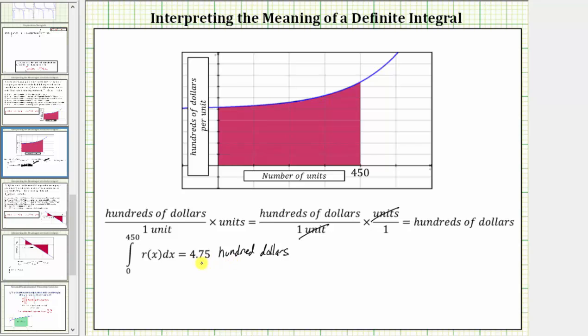4.75 times 100 equals 475. This is equal to 475 dollars, which means the meaning of this definite integral is the company generates 475 dollars of revenue from selling the first 450 units.